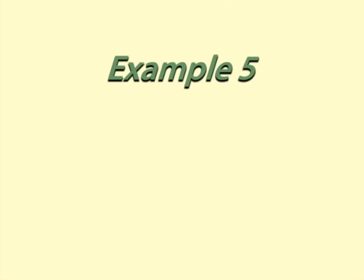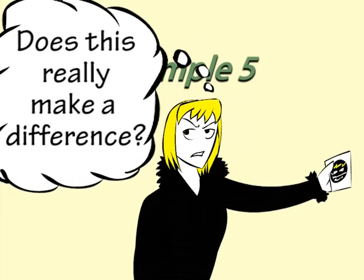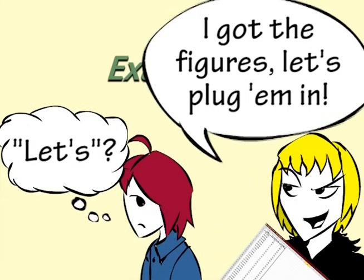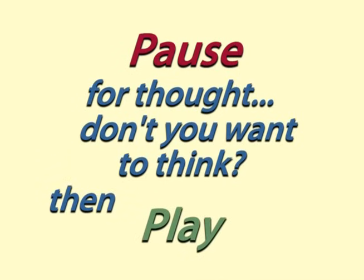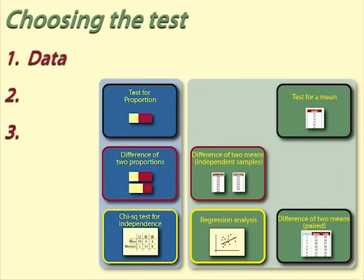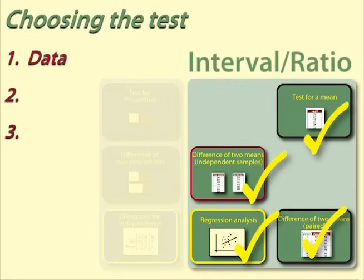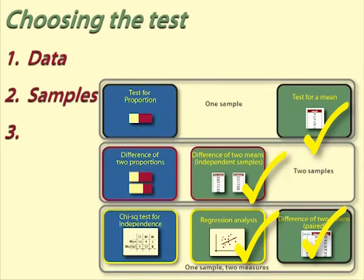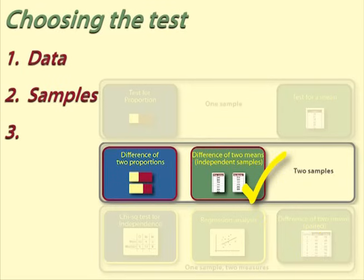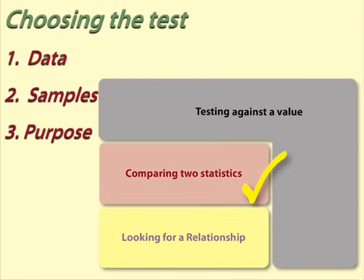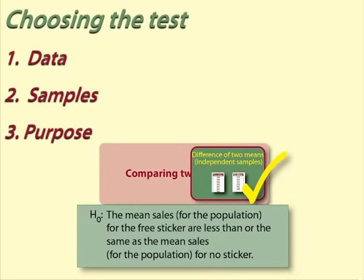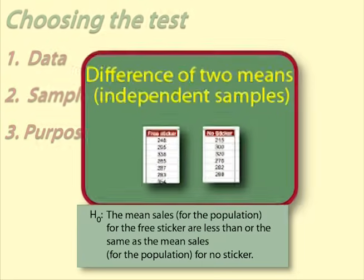Example 5: Do stickers help sales? Helen is exploring whether having free stickers makes a difference to sales. She has the sales figures for 13 days when she did offer free stickers and 10 days when she did not. Data: for each day Helen has a sales value — this is interval ratio data, summarised as a mean number of sales. Samples: two samples — one for days with stickers and one for days without. Purpose: comparing the average sales figures for the two treatments. The test to use is difference of two means independent samples.